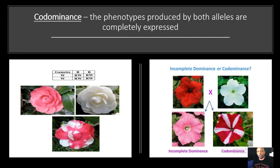Now let's take a look at codominance. In codominance, the phenotypes produced by both alleles are completely expressed — you actually see both alleles expressed. Looking at this picture on the left, here's a pink flower crossed with a white flower, and in the resulting offspring you can actually see the pink and white alleles both expressed phenotypically.